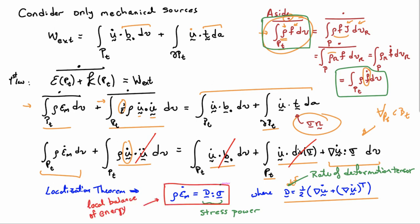This expression is the local balance of energy in our system. However, we have only considered mechanical sources of work on this part of the body. There are other ways to impart energy that we must also account for, which will add additional terms to this relationship.